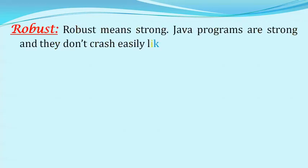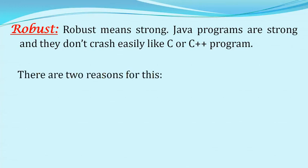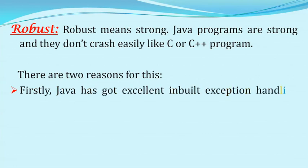The next feature is robust. Robust means strong. Java programs are very strong and they don't crash easily like C or C++ programs. There are two reasons for this. Firstly, Java has excellent inbuilt exception handling features. An exception is an error that occurs at runtime. If an exception occurs, the program terminates abruptly, giving rise to problems like loss of data. Overcoming such problems is called exception handling. Even though an exception occurs in a Java program, no harm will happen.